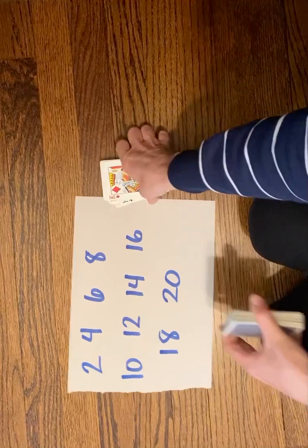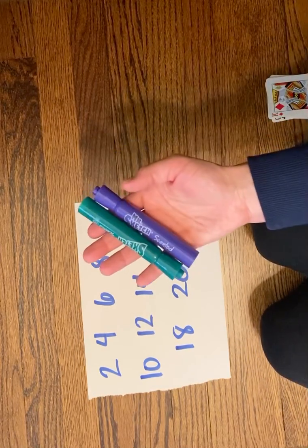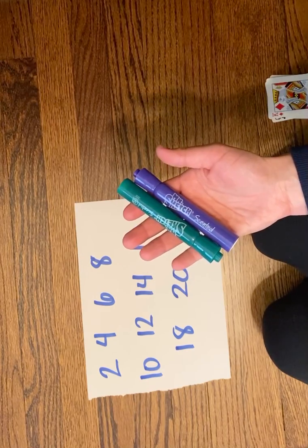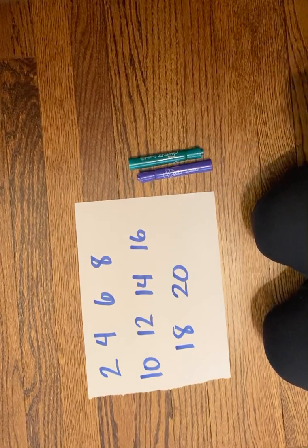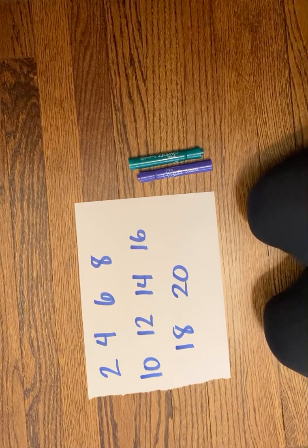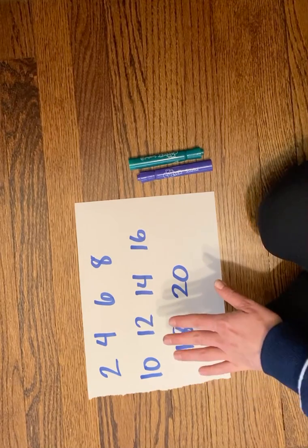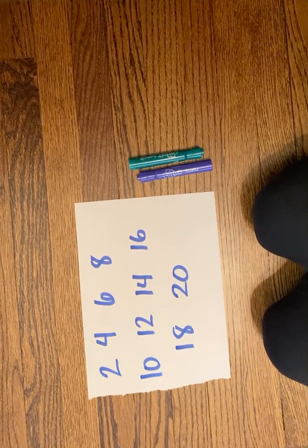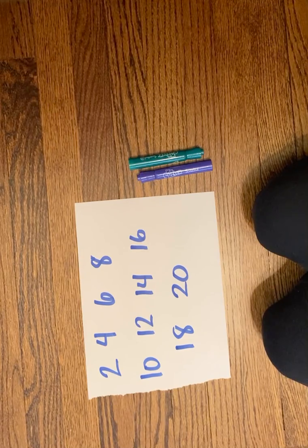You can either play by yourself with two colors, like I'm going to play today—I'll play green against purple—or if you have somebody at home who would like to play with you, you can play against them. Just make sure that you use two different colors of marker, pen, or crayon. You'll also need to make yourself a game board like this each time you want to play.